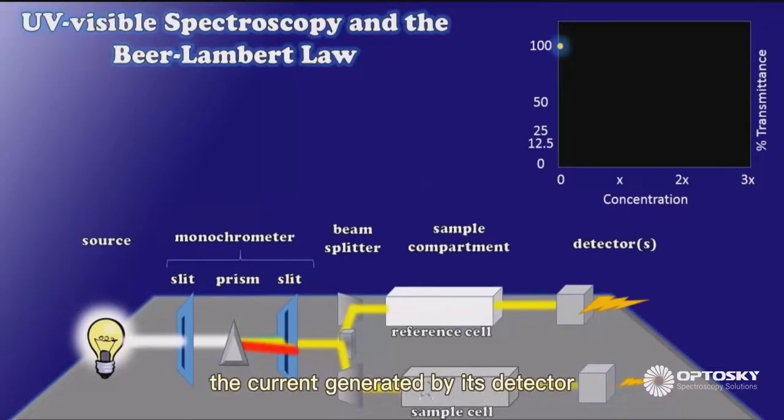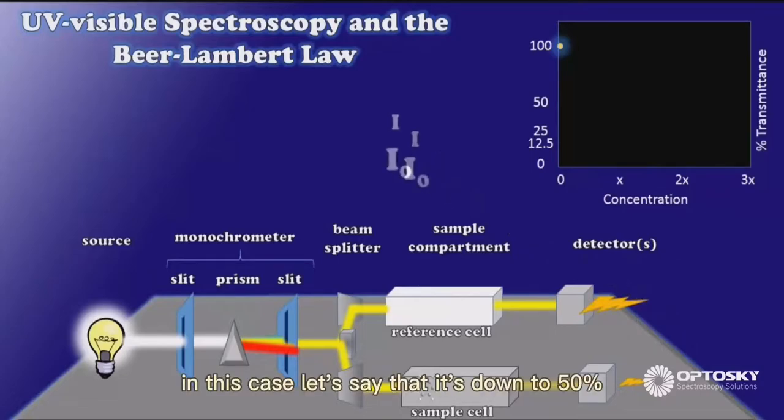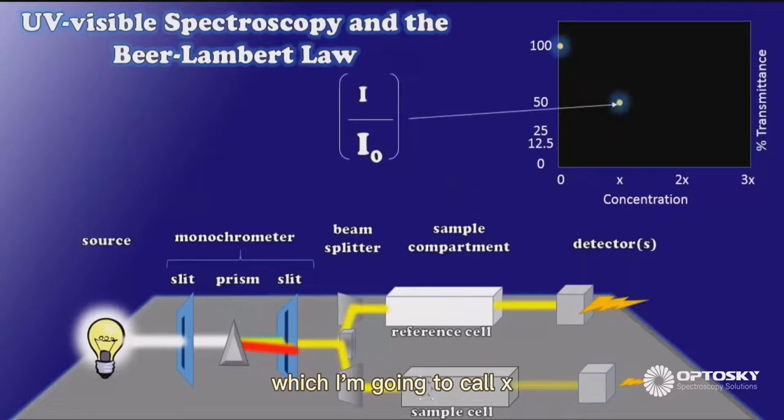And therefore, the current generated by its detector has also decreased. So now the ratio of intensities is no longer 100%. In this case, let's say that it's down to 50% at a given concentration, which I'm going to call X.